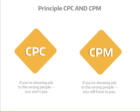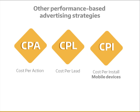CPC isn't the only performance-based advertising strategy. Others include CPA, or cost per action; CPL, or cost per lead; and CPI, or cost per install. That one's popular on mobile devices. As an advertiser, you only pay if someone installs your app.